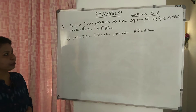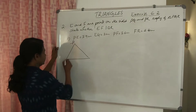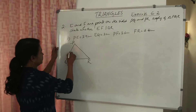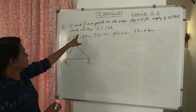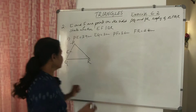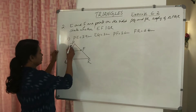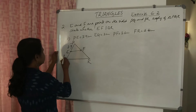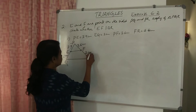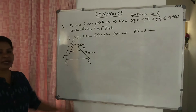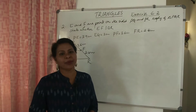E and F are points on the sides PQ and PR respectively of triangle PQR. The given values are: PE equals 3.9, EQ equals 3.9, PF equals 3.6, and FR equals 2.4. We need to find whether EF is parallel to QR. To check this, I will apply the Basic Proportionality Theorem.